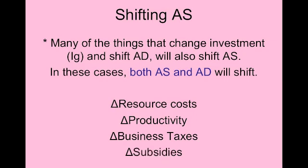Subsidies are the opposite of taxes. If the government takes taxes from a business, they're taking money away. But if the government gives a company a subsidy, it gives the company money just to encourage them to make their product. The subsidy decreases per unit production costs for the business, and so aggregate supply would increase.